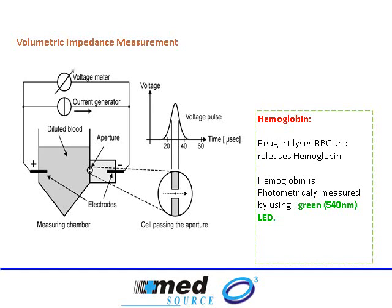By counting the number of times we get a small signal, we know how many platelets we have. By counting the number of times we get a medium signal, we know how many RBCs we have, and by counting the large signals, we know the amount of WBCs. The blood is diluted so that only one cell passes through the aperture at any point in time. Within WBCs, lymphocytes have a different size compared to monocytes and granulocytes, producing different electrical signals. The machine counts all of them and reports the values.